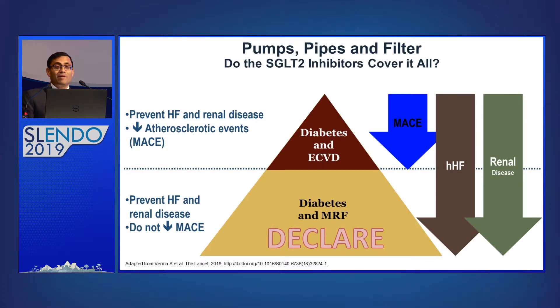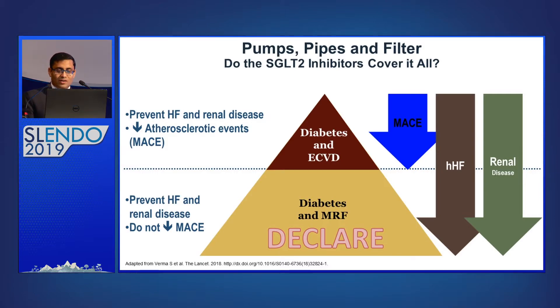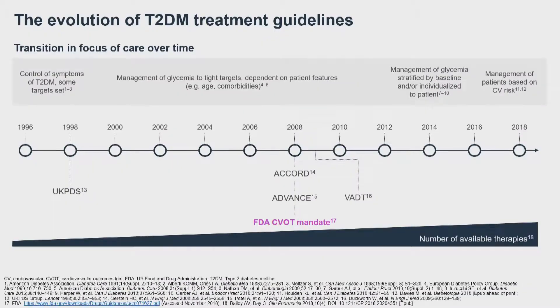Do all SGLT2 inhibitors cover it all? Probably yes. Regarding MACE, it has been shown; regarding hospitalization for heart failure, it has been shown across all classes of patients — whether they have established cardiovascular disease or not. Regarding renal endpoints: a patient may not have had an MI or coronary artery disease, but these drugs would still prevent renal outcomes.